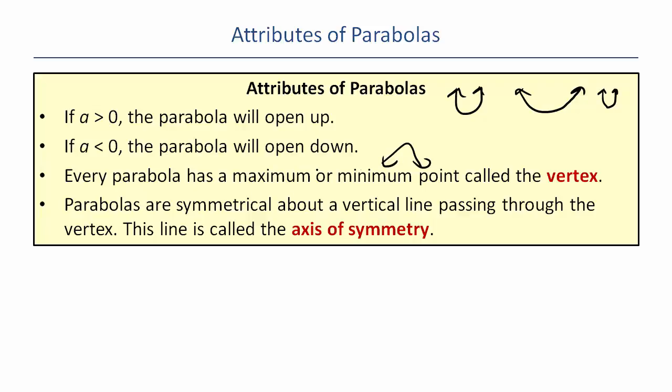Every parabola has a maximum or a minimum called the vertex. These would all be minimums and this would be a maximum and they're all called vertex. And they're symmetrical about the vertical line passing through the vertex. What that means is if you drew a vertical line, the parabola should be symmetrical on each side of it.